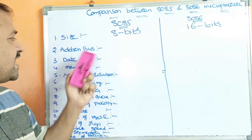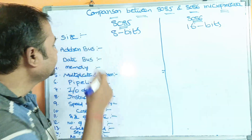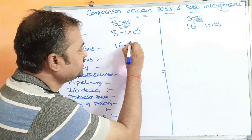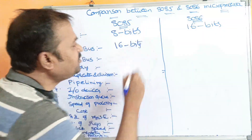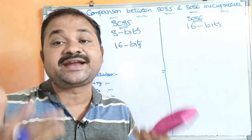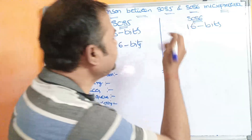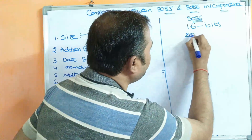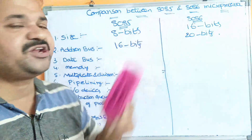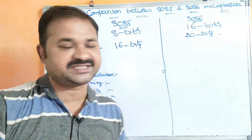The second characteristic is the address bus. The size of the address bus in the 8085 microprocessor is 16 bits, so it uses 16-bit address lines. Whereas the size of the address bus in the 8086 microprocessor is 20 bits, so it uses 20-bit address lines.